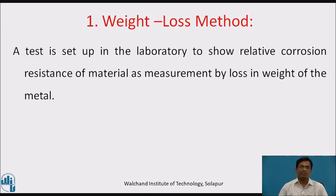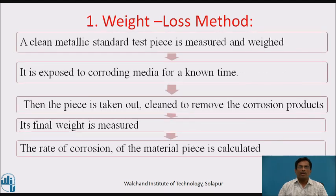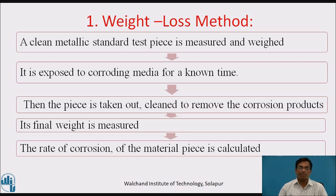Weight loss method. A test is set up in the laboratory to show relative corrosion resistance of material as measured by loss in weight of the metal. A clean metallic standard test piece is measured and weighed. It is exposed to corroding media for a known time. Then, the piece is taken out, cleaned to remove the corrosion products, and its final weight is measured. The rate of corrosion of the material piece is then calculated.